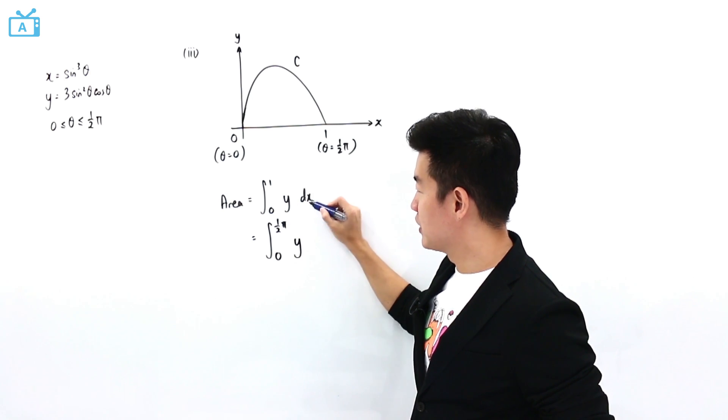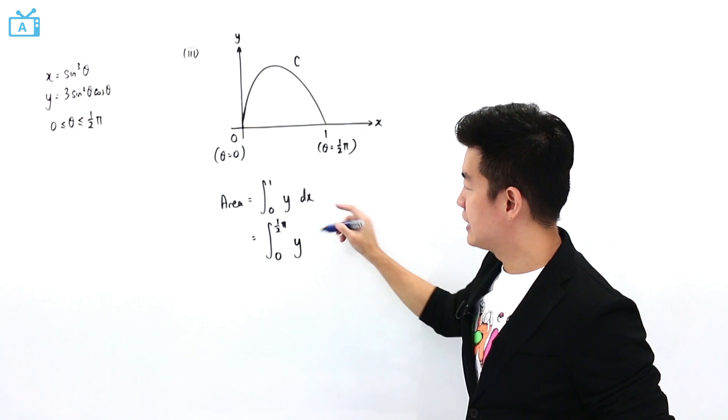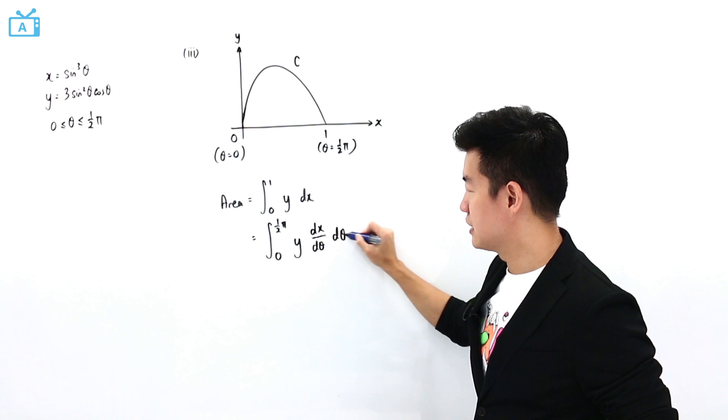And y is going to be y that will be replaced by this in terms of theta. And dx will be replaced by dx d theta d theta.